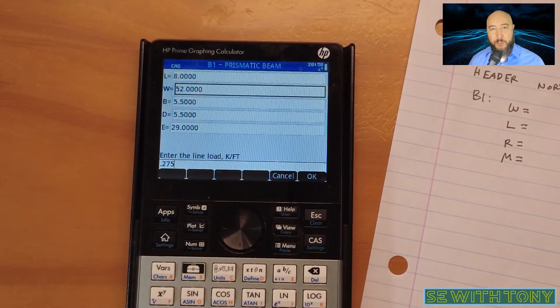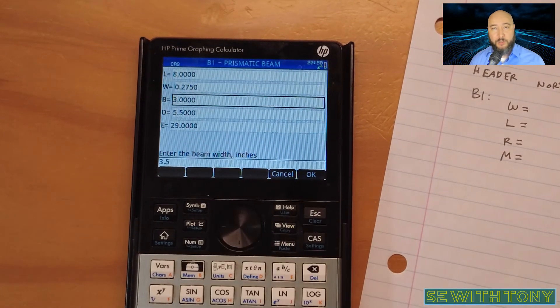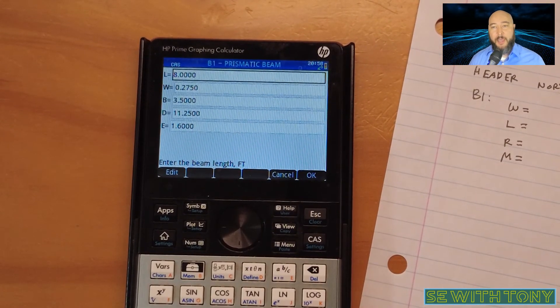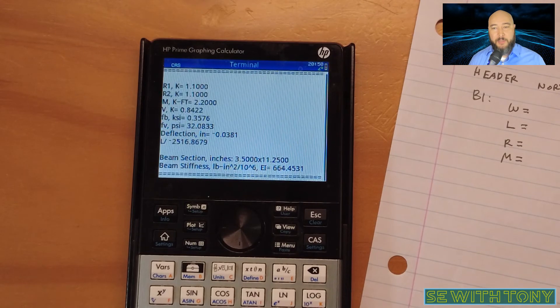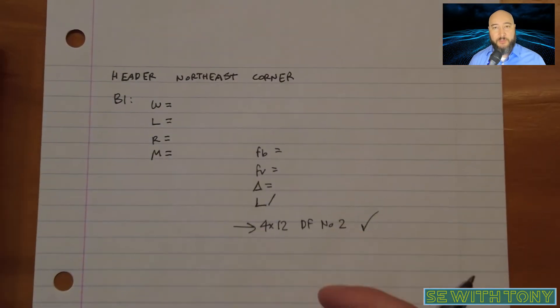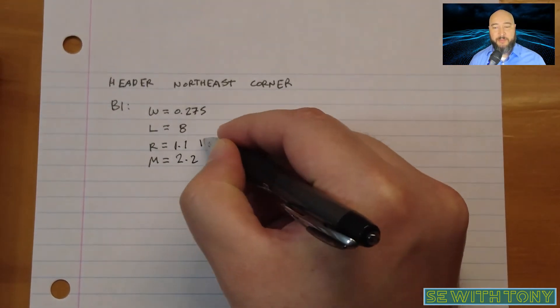Maybe the architect wants to make the window opening bigger or smaller or move a wall here. And it helps them make those iterations and reduce the errors by using the programs that I've shared with them.